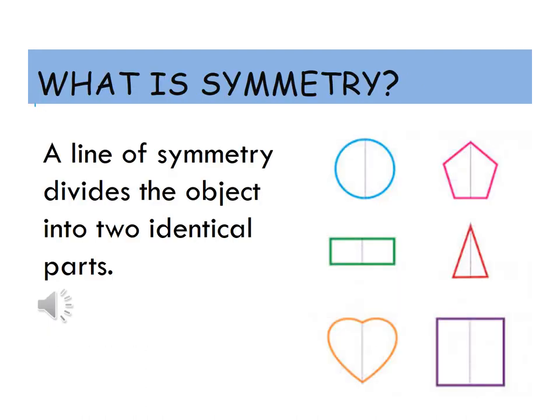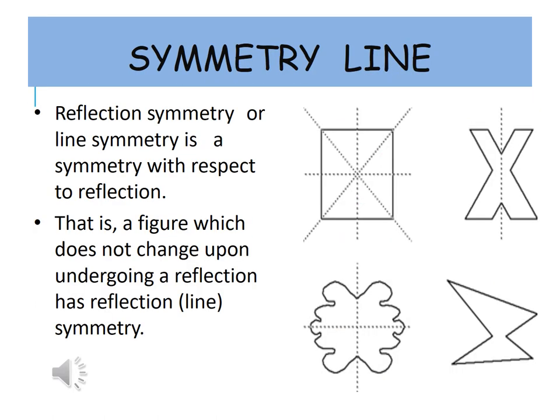What is symmetry? A line of symmetry divides the object into two identical parts. Reflection symmetry or line symmetry is a symmetry with respect to reflection — that is, a figure which does not change upon undergoing a reflection has reflection line symmetry.